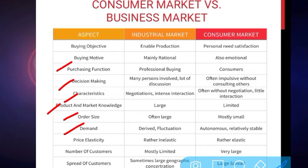Then comes demand. In the industrial market, demand is a derived demand and it fluctuates as per production capacity — if production capacity increases, demand also increases and vice versa. While in the consumer market, demand is autonomous, that is independent demand not influenced by any other factor, and it is relatively stable compared to the industrial market, though consumer demand may also fluctuate.